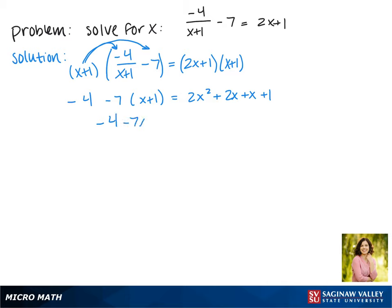Now on the left we have to distribute that negative 7 to both terms, and on the right we're going to combine those two x terms, 2x and x, to make 3x.